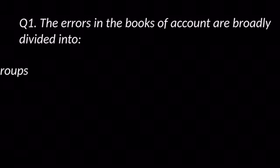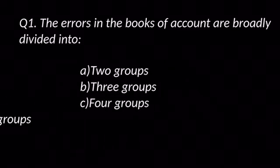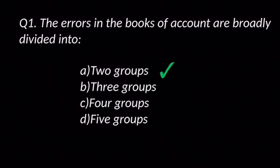Question number one: The errors in the books of account are broadly divided into — options are: A. Two groups, B. Three groups, C. Four groups, and D. Five groups. The answer is A: Two groups.